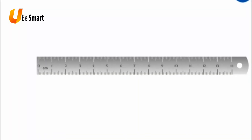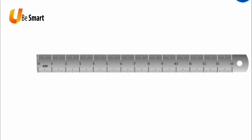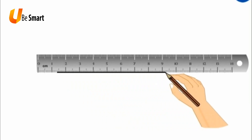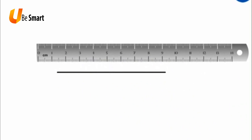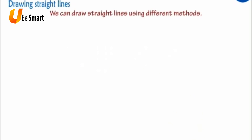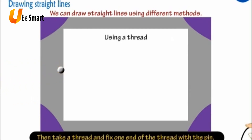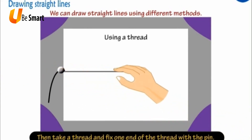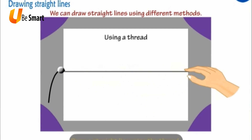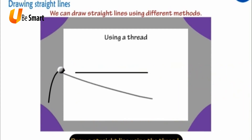Straight lines. Generally, we can draw a straight line using a ruler. This is a scale — an instrument in the geometry box. Using this, we can draw straight lines. We can draw straight lines using different methods. Using a thread: Take a thread. Take a cardboard and fix a pin on one end. Then, take a thread and fix one end of the thread with the pin. Draw a straight line using the thread.